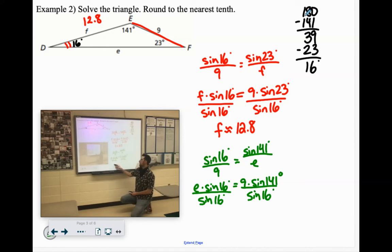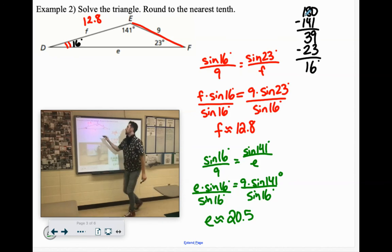We're approximating, so E squiggly equals 9 times sine of 141 divided by sine of 16, which is 20.54, so we'll say 20.5. Down here, 20.5.